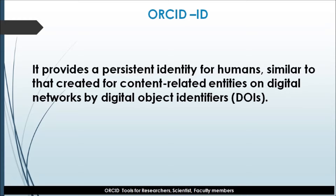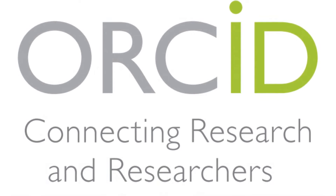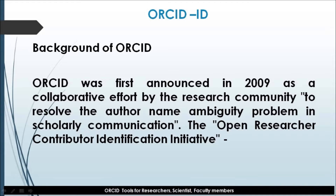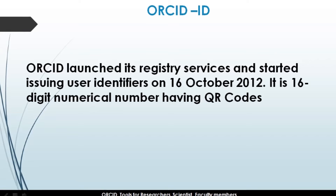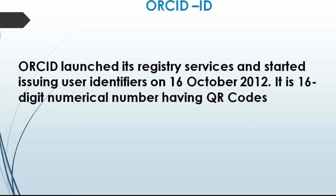ORCID was first launched in 2009 as a collaborative effort by the researcher community to resolve author name ambiguity and duplication of citations in scholarly communication. The Open Researcher and Contributor Identification initiative — hence the name ORCID — was officially created on 16 October 2012, when it started its registry service.